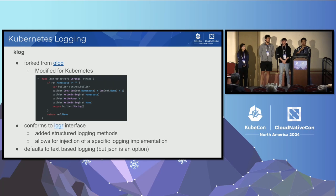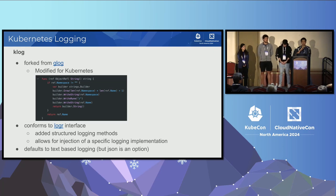Specifically, you can pass an object ref and it will automatically break apart the object ref into constituent strings. This library conforms to the Logger interface, which is a library created by Tim Hawken. It basically allows you to inject different logging implementations and has a logging interface. The logs in Kubernetes default to text-based logging, though you can output logs in JSON format.